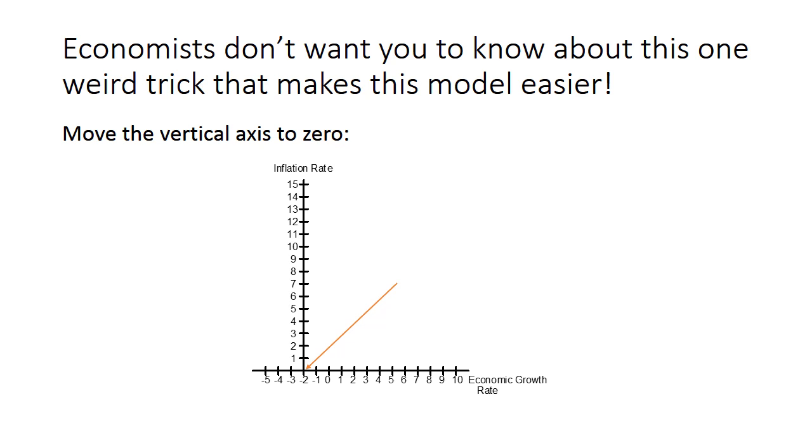You've all been drawing the vertical axis at zero on graphs for as long as you've been drawing graphs. I guess maybe they want to emphasize that economic growth can be negative? But I think it's better to just say, hey, economic growth can be negative, than it is to draw a confusing graph.